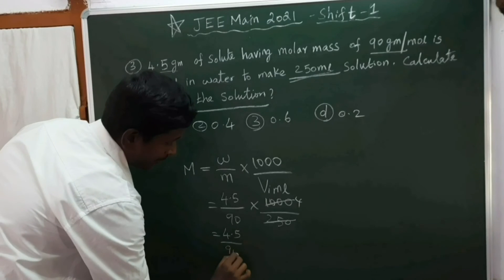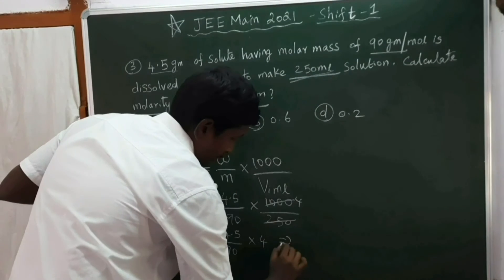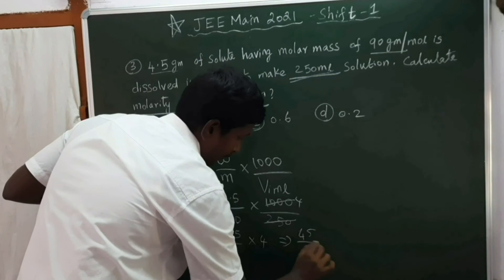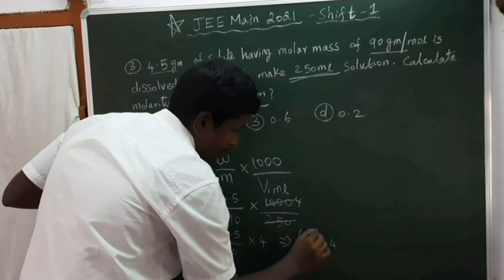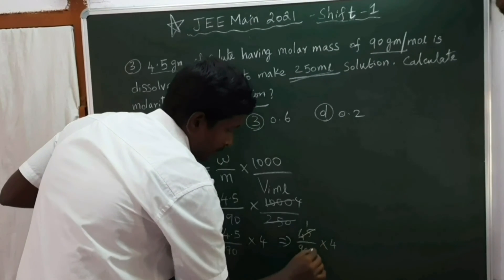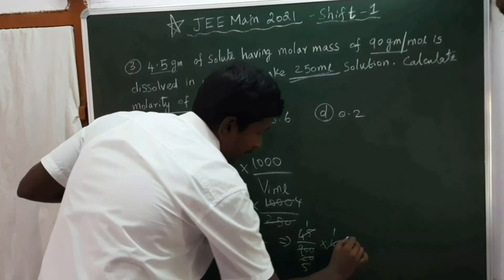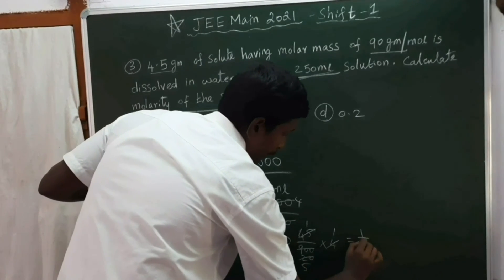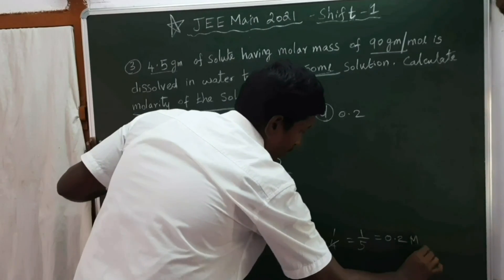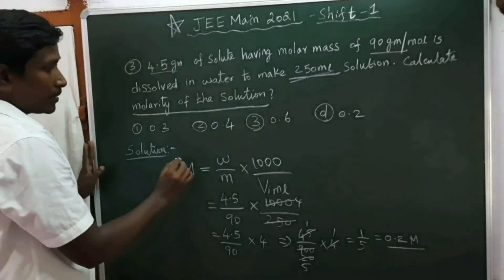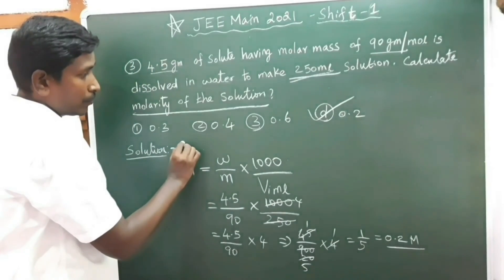Molarity = 4.5 ÷ 90 × (1000 ÷ 250) = 4.5 ÷ 90 × 4 = 45 ÷ 900 × 4 = 1/20 × 4 = 1/5 = 0.2 molar. So the answer is option D, 0.2 M.